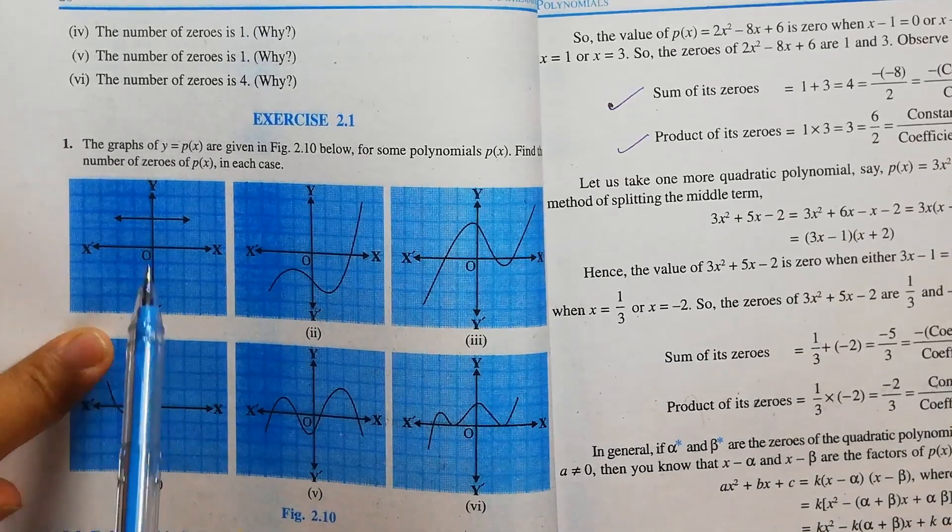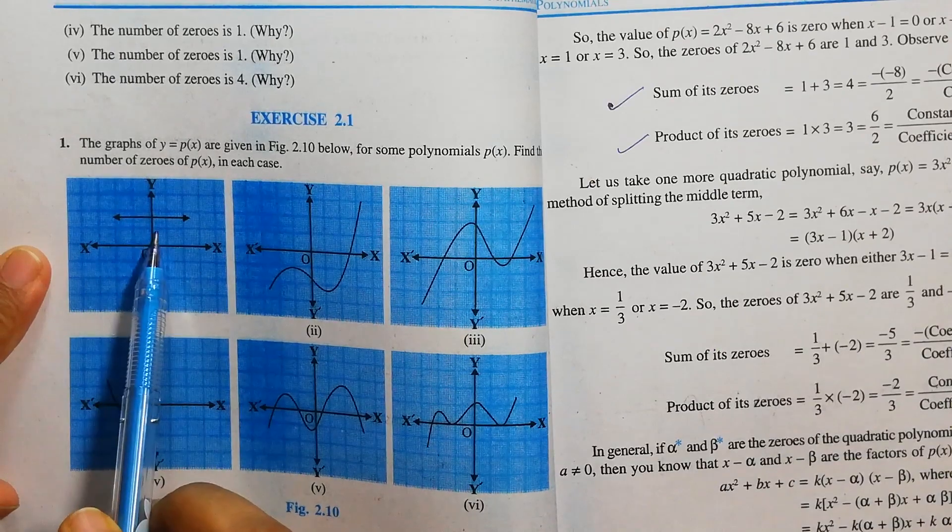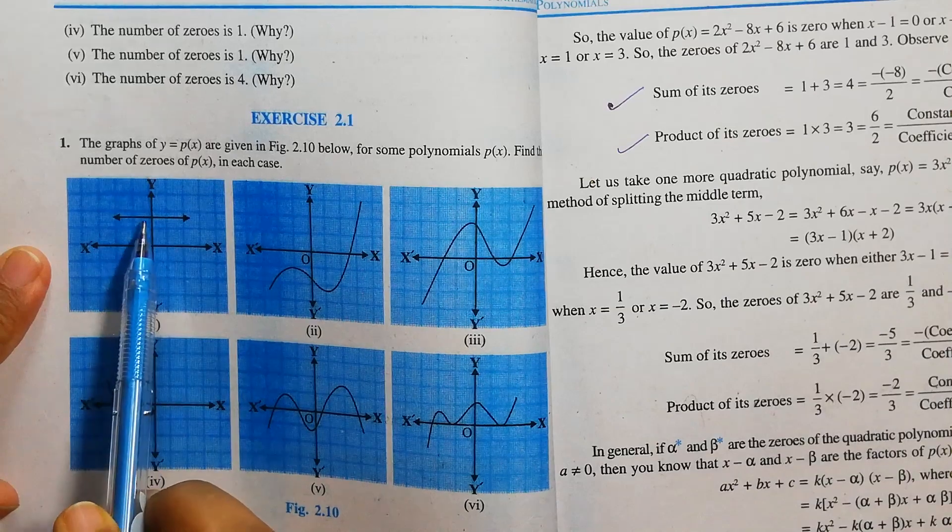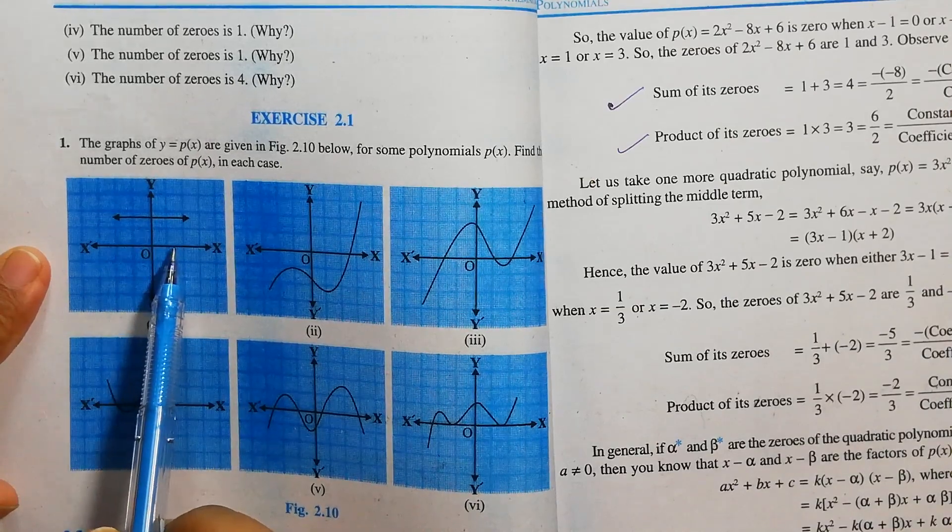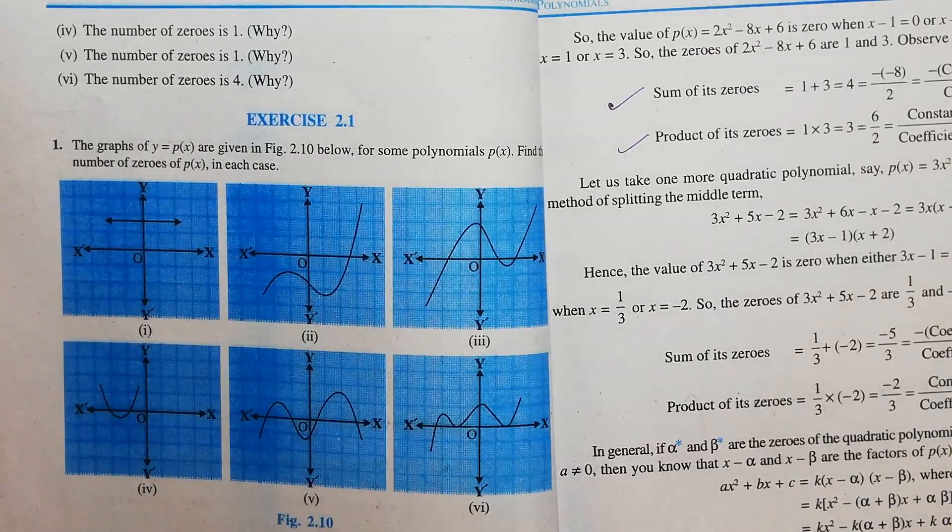Question number 1. We can see that the graph is a straight line. The line is passing through the y-axis. That means it is not touching the x-axis. The graph does not cut the x-axis. That means there are no zeros. How many points the graph intersects on the x-axis? That is the number of zeros.